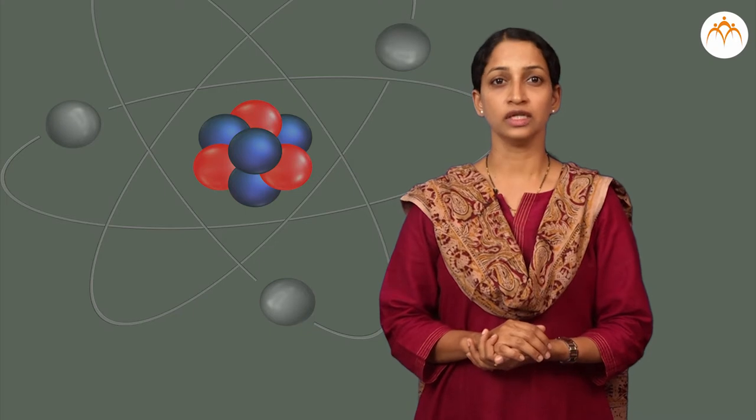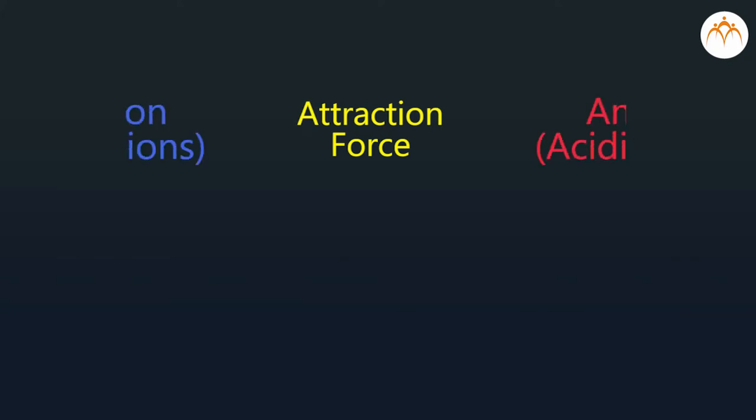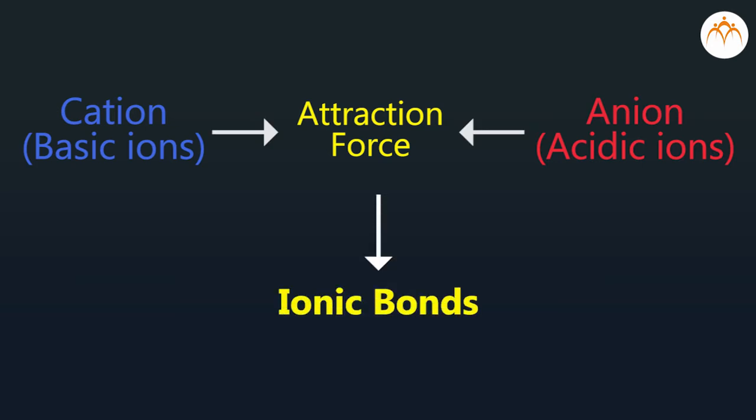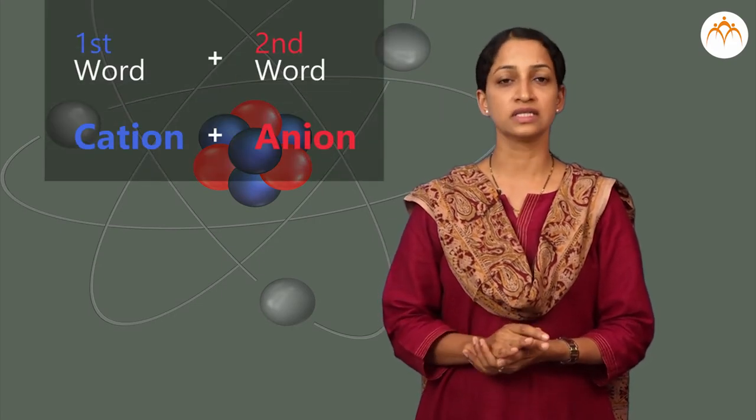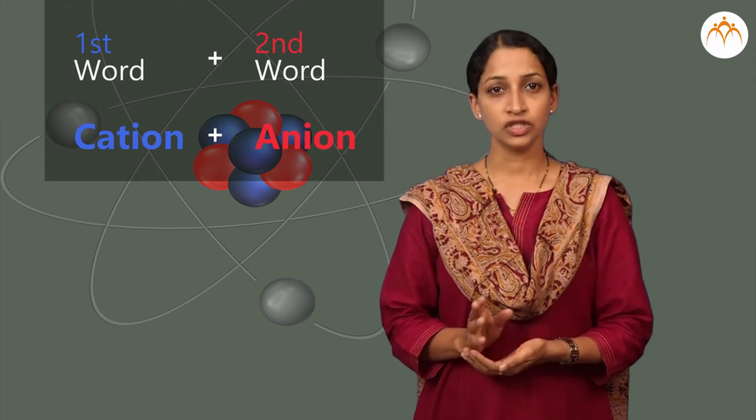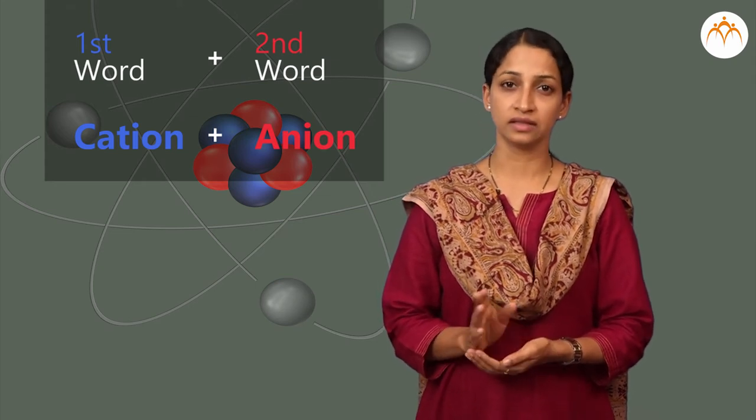Chemical formulas of ionic compounds. There are two parts of ionic compounds. The attraction force between cation (basic ions) and anion (acidic ions) creates ionic bonds. While writing ionic compounds, the first word is the name of the cation and the second word is the name of the anion.